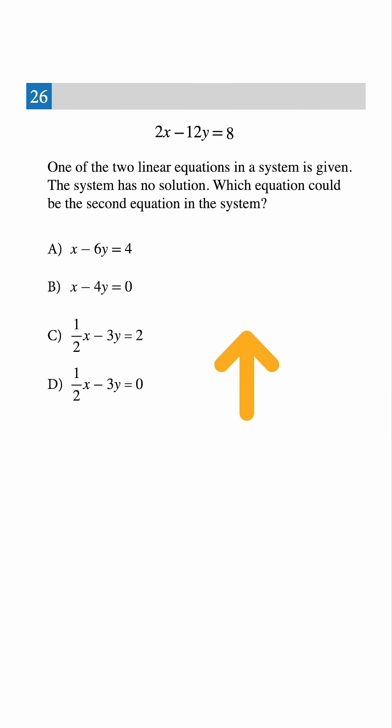80% of students miss this SAT question. We're told one equation is 2x minus 12y equals 8, and the system has no solution. We are asked to find the second equation.